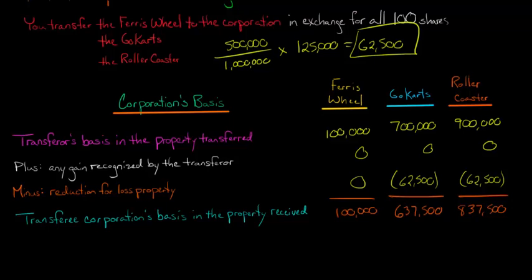The reason for Section 362E is that the tax code is trying to prevent you from transferring loss property to a corporation and doubling up on losses — where you sell your stock at a loss and then the corporation also sells the property at a loss. They don't want you doubling up on losses.